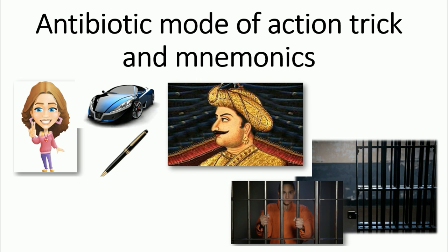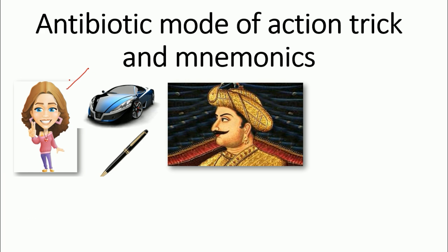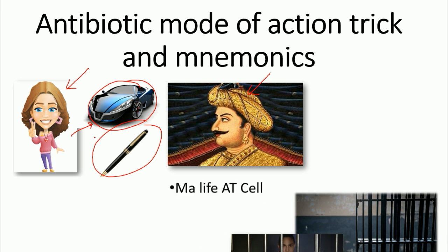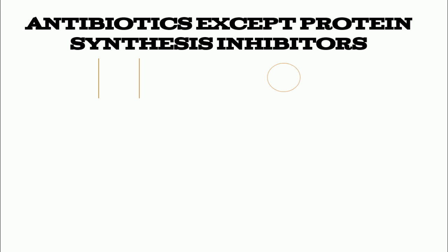The only thing you need to remember is a royal story involving an Indian girl named Neetu, a Sultan, and some gifts Neetu bought for the Sultan — a beautiful car and a fluid pen. The second part of the story deals with being in a cell — my life in a cell. Pretty weird, but it will definitely help you remember.